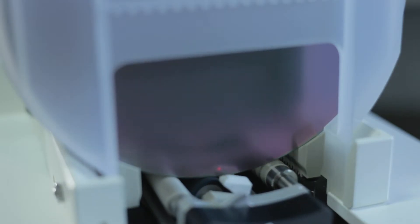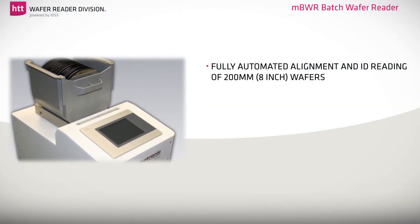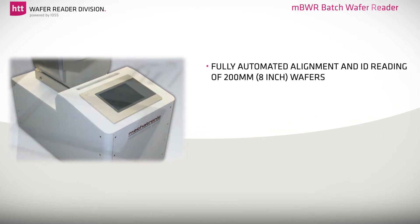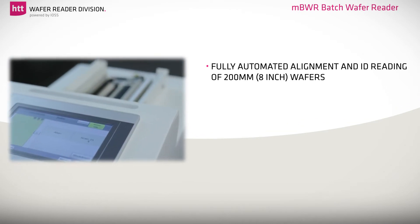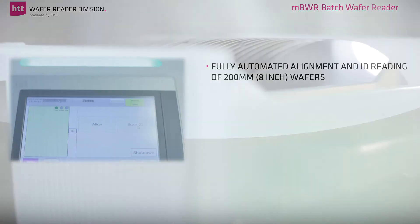The Mechatronic HTT batch wafer reader allows fully automated wafer alignment and wafer ID reading of 200 millimeter wafers in a cassette with 25 slots, fast and easy in one single step.